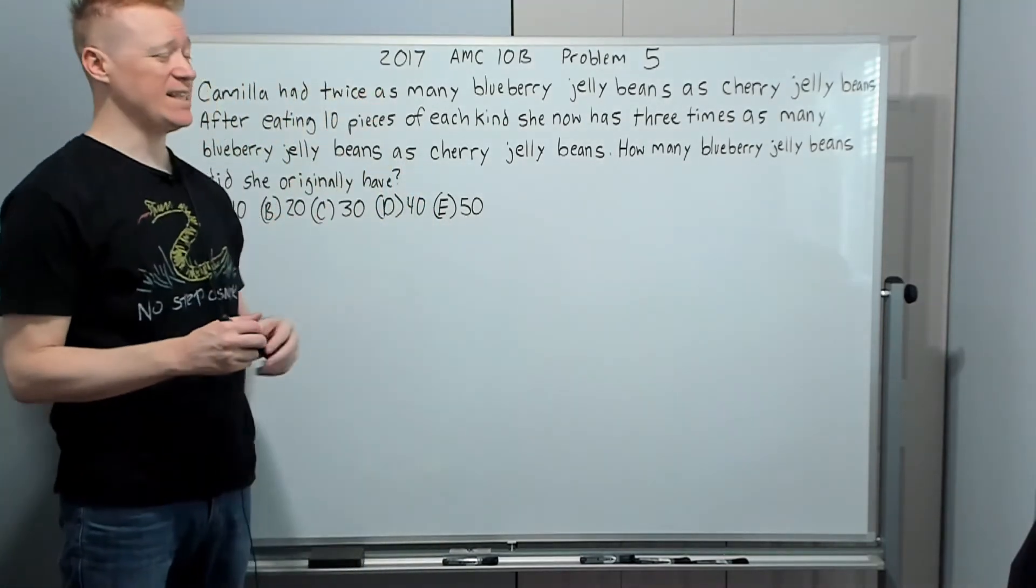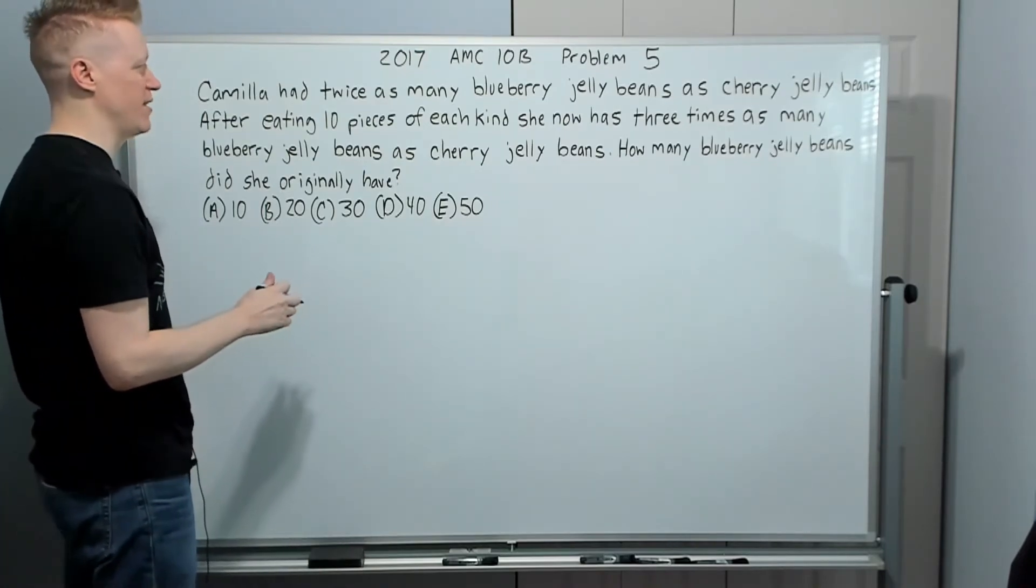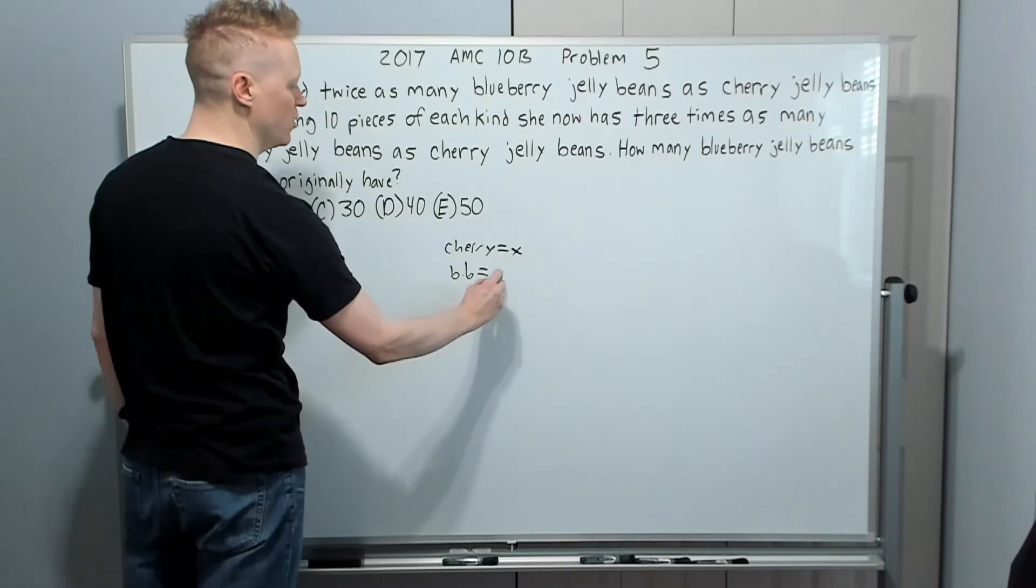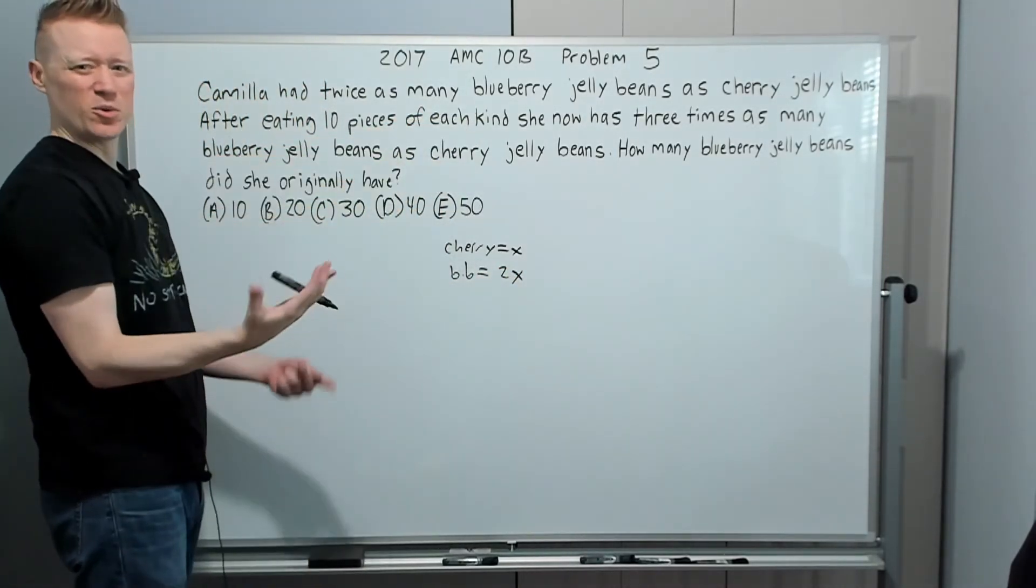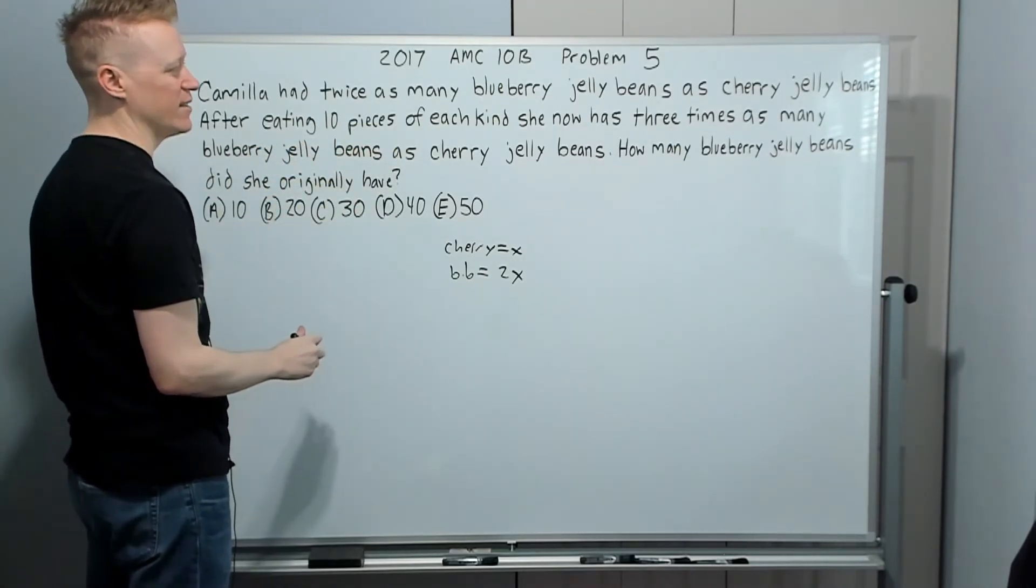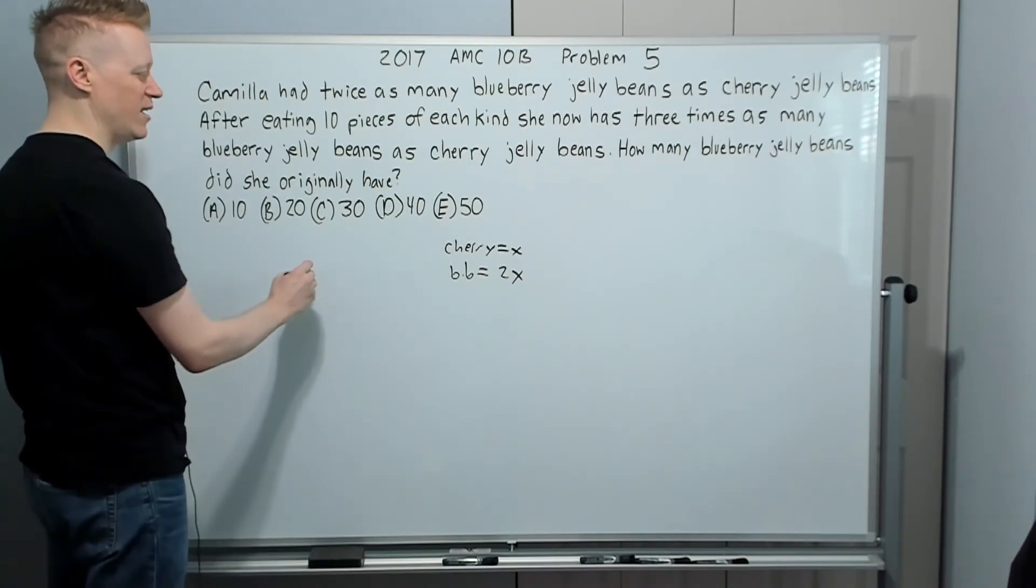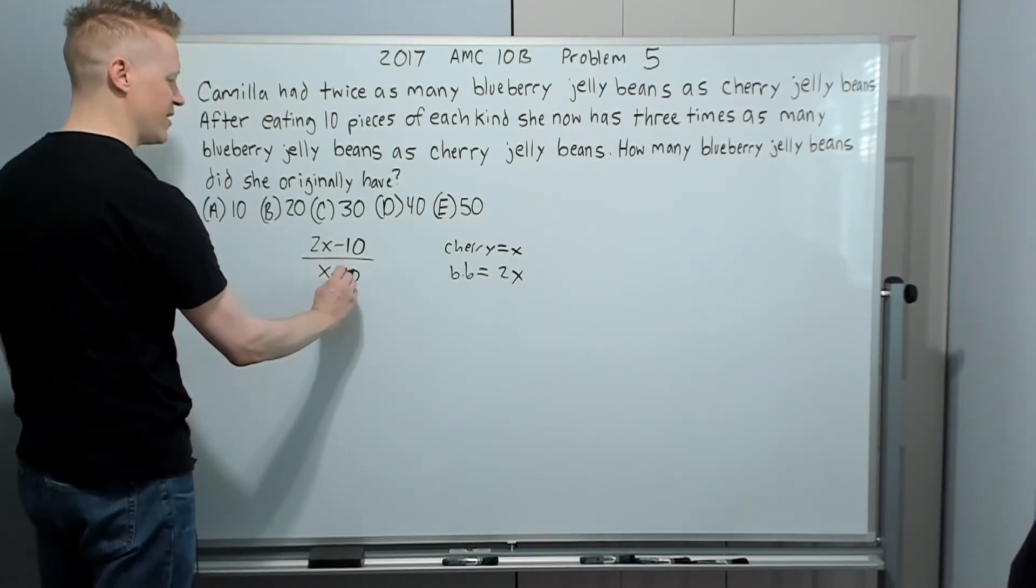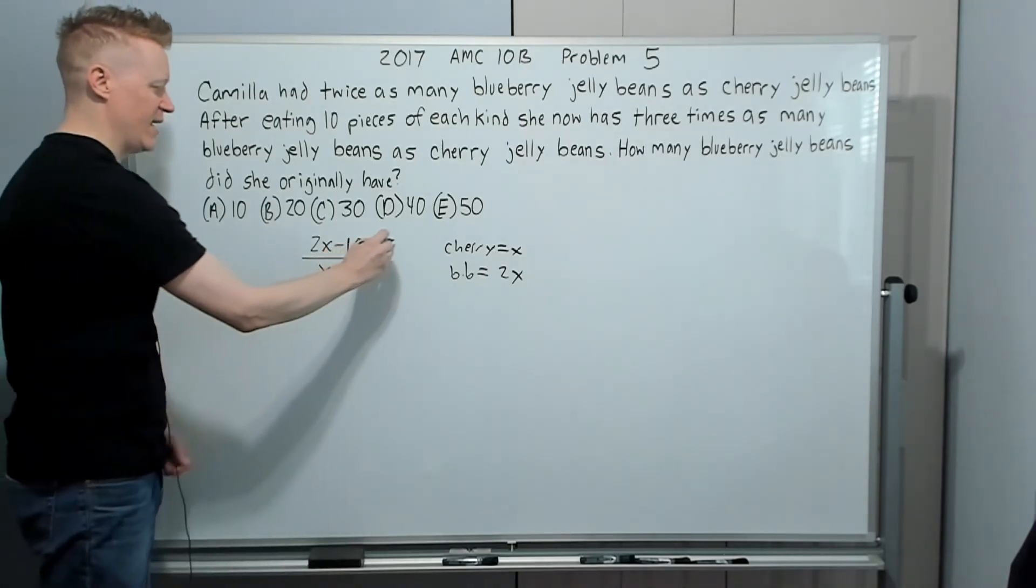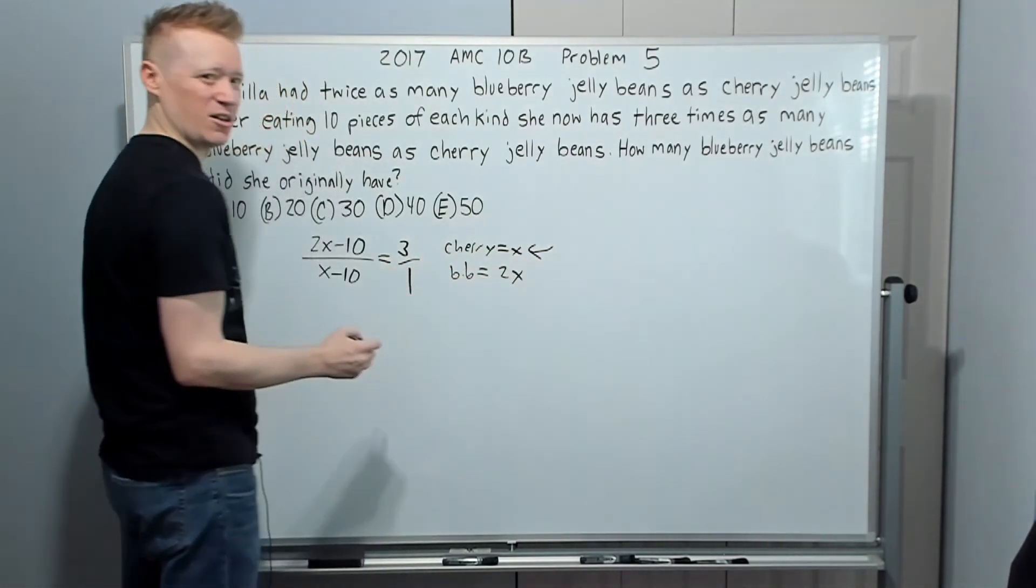Okay. And here we are on the 2017 AMC 10B problem five. The last problem of this set. Camila had twice as many blueberry jelly beans as cherry jelly beans. So let's let cherry equal X and blueberry will equal two X. Again, make sense of what you read as you read it in general. Sometimes I do. Sometimes I don't, but when I'm thinking about it, I do after eating 10 pieces of each kind. So she's going to lose 10 from here and lose 10 from here. She now has three times as many blueberry jelly beans as cherry. So if I take two X minus 10 and X minus 10, I've made this into a ratio. Why? Because we can now make that ratio equal to three to one. And that would look like this.